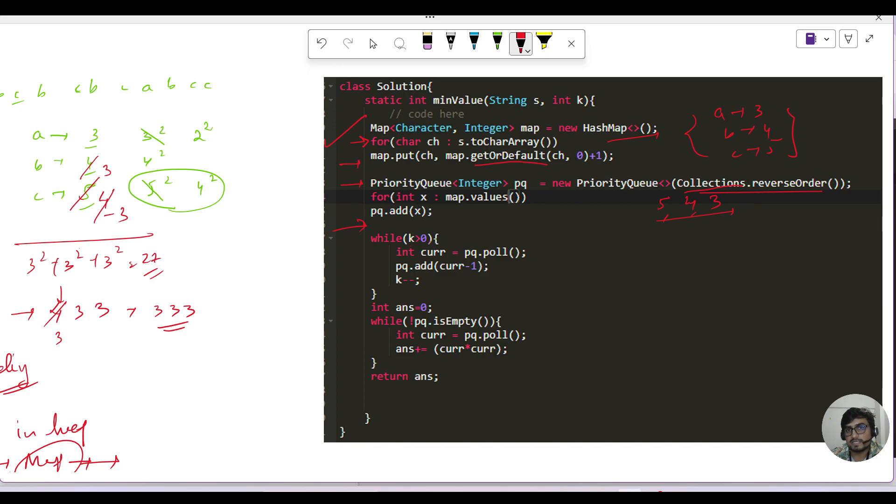Now, we are removing the k characters. So first of all, what have we done? The pq.poll call will get 5, the first element, and we decrement it by 1 and push it again. So here will be 4, 4, 3. Then again, k is 3, so we have done this one time. Second time, what will happen? This will become 3. So it will be 4, 3, 3. Third time, this will come out, and then again 3, 3, 3. So this is your final stage of all the elements present in the priority queue. So what we need to do as the last step, you just iterate in the PQ, you pull all the elements, do the square, and add it in your answer and return the answer. That is it.